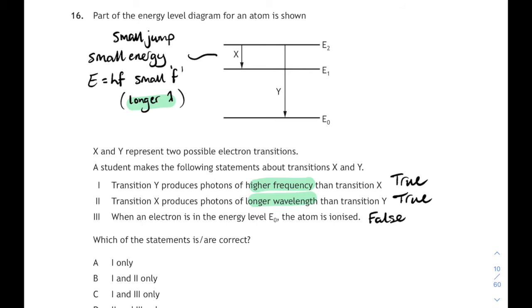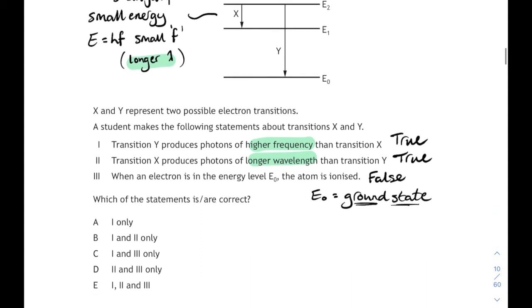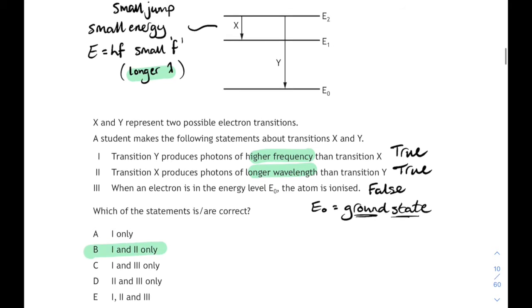When the electron is at energy level E0 down at the very bottom, it's ionized. That's false. Because E0 is the bottom state. E0 is the ground state. That's the lowest energy level. For the atom to be ionized, the electron would have to escape from the uppermost level. So true, true, false. 1 and 2 is correct. That's answer B, 1 and 2 only.